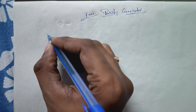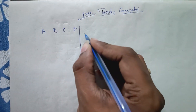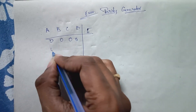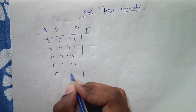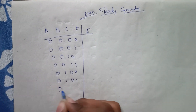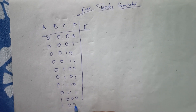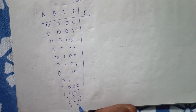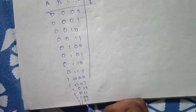In this video we will see how to design an even parity generator. Before that, we will write the truth table. I will take four inputs: A, B, C, D, and I am writing here 'even parity.' The possible input combinations start from 0 0 0 0, 0 0 0 1, 0 0 1 0, 0 0 1 1, and continuing through 0 1 0 0, 0 1 0 1, 0 1 1 0, 0 1 1 1.